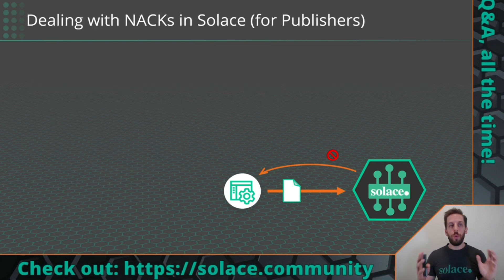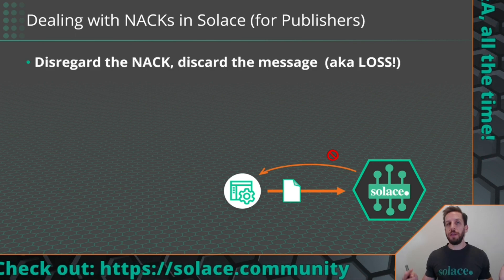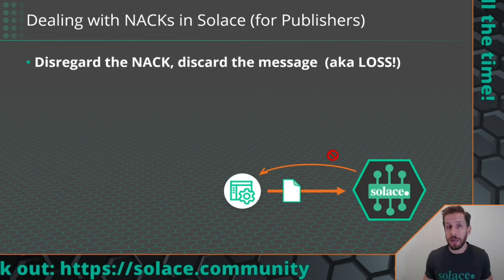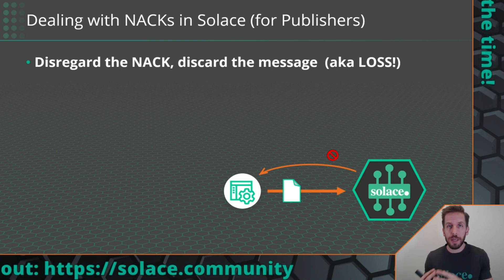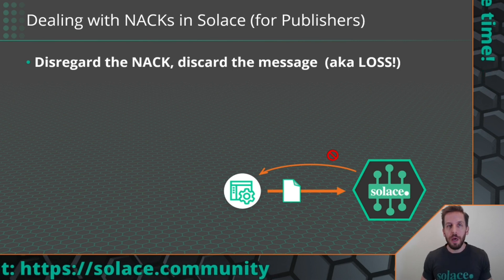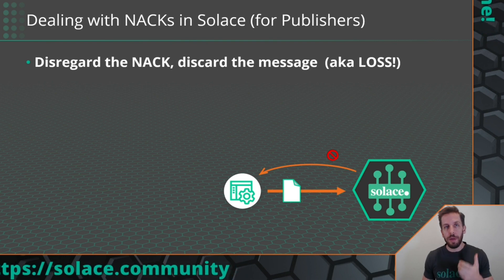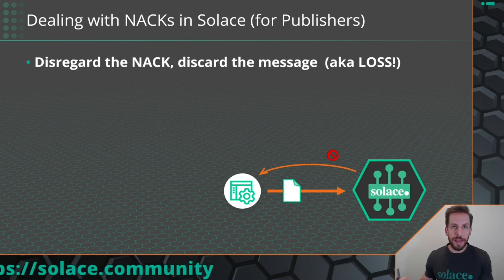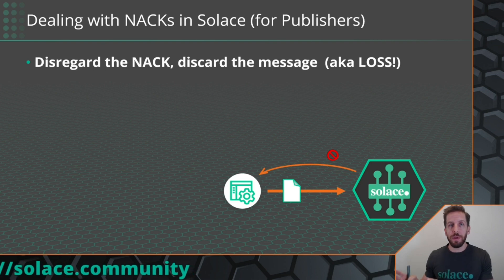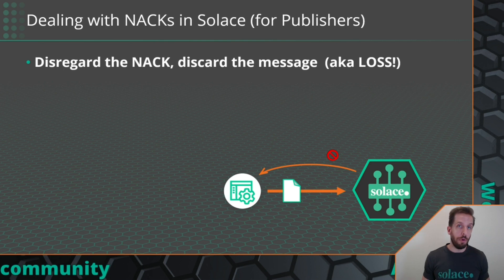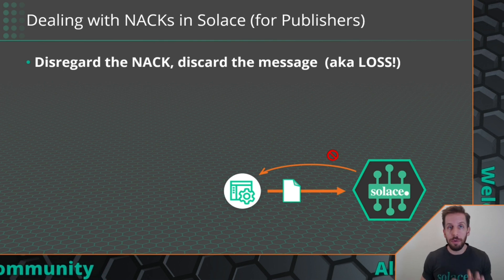So what can you do when you get a NACK? By far the dumbest thing you can do is to ignore it — to disregard the NACK and discard the message, which is essentially data loss. The broker does not guarantee delivery until the publisher gets that acknowledgement back. So if the publisher just ignores the NACK, you are ignoring the broker saying something went wrong, and you are incurring loss. Unless you log it or do something, you won't even know you're getting NACKs. Please don't do that.